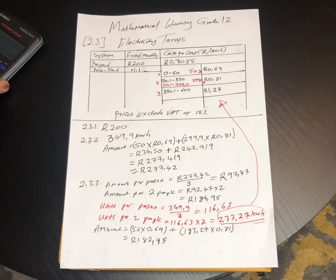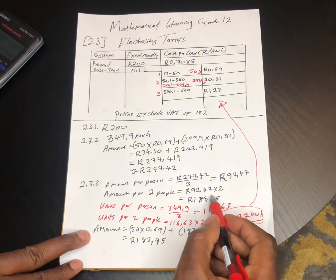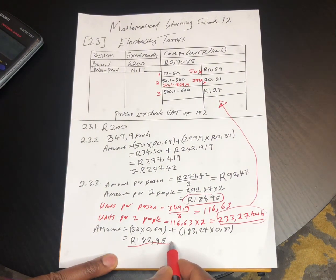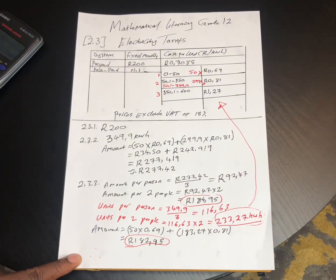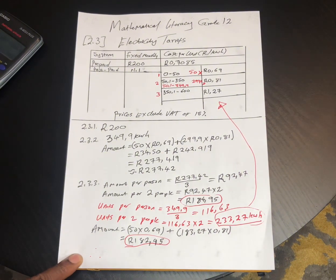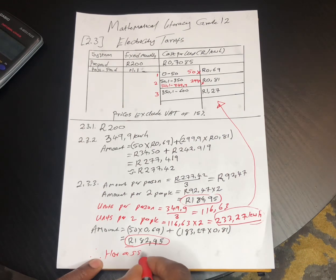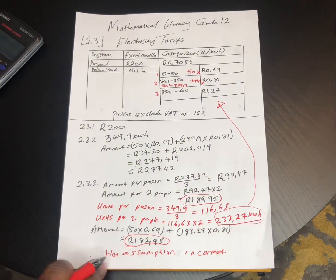Checking: the two-thirds claim gave R184.95, but the actual calculation gives R182.95. Since 182.95 is not equal to 184.95, we conclude that her assumption is incorrect.